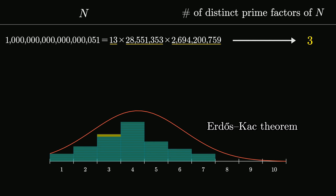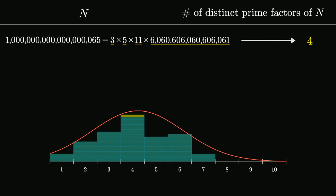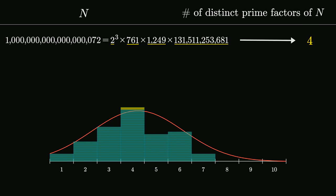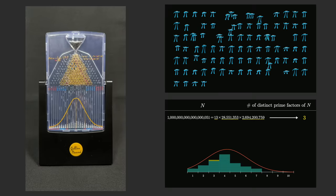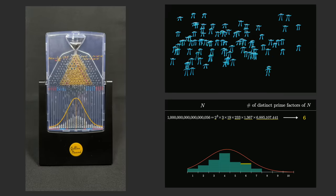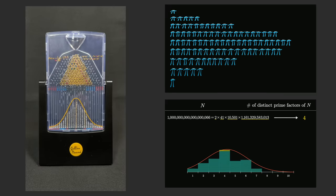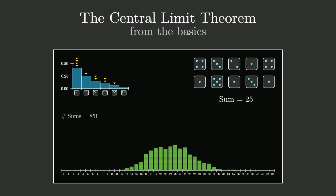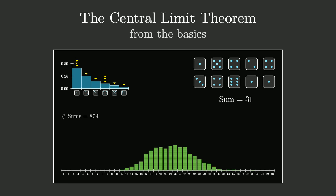Our topic for today is one of the crown jewels in all of probability theory. It's one of the key facts that explains why this distribution is as common as it is, known as the central limit theorem. This lesson is meant to go back to the basics, giving you the fundamentals on what the central limit theorem is saying, what normal distributions are, and I want to assume minimal background.